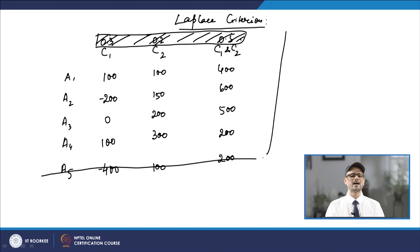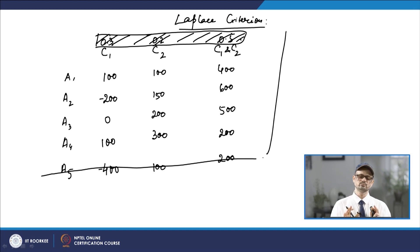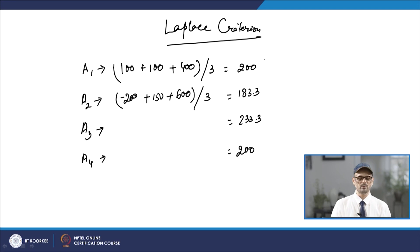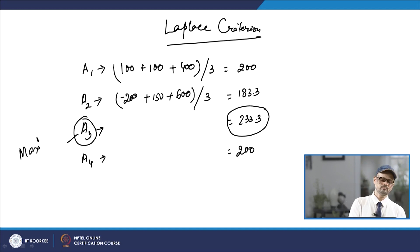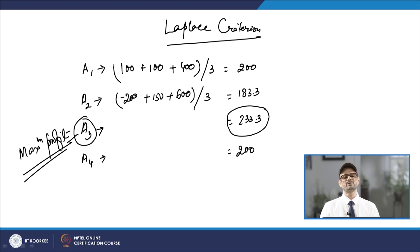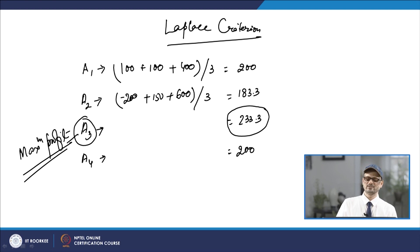Using the Laplace criterion, we give equal probability to all futures and compare the average profit across alternatives. Alternative A3 proves to be the best because it gives the maximum profit. Therefore, with the Laplace criterion, alternative A3 should be chosen.